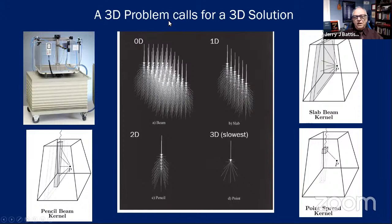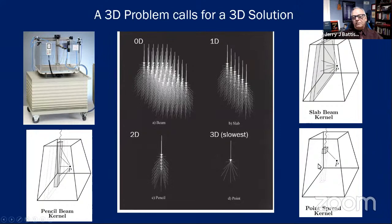This has evolved over time. The water tank is a zero-dimensional integration — you get the whole dose pattern in one shot. The pencil beam kernel is a 2D integration. A slab kernel is reminiscent of the old Cunningham program C-beam. Finally, the slowest but most accurate technique is a 3D integration of scatter from individual voxels. All x-ray energy is deposited by charged particles liberated in the absorber — photons do not deposit dose, only charged particles do.